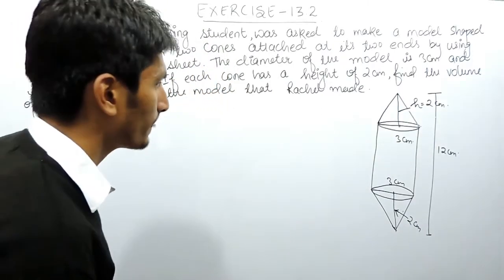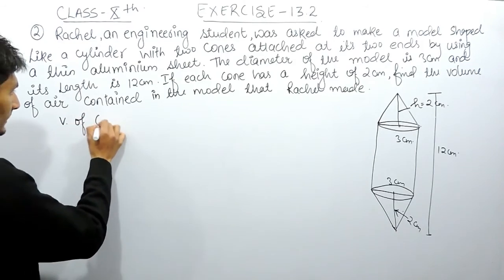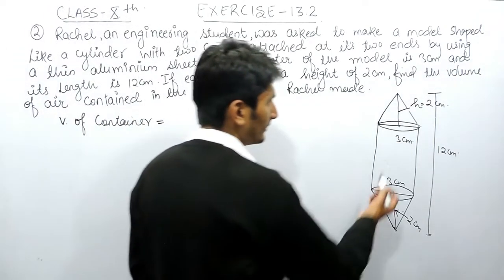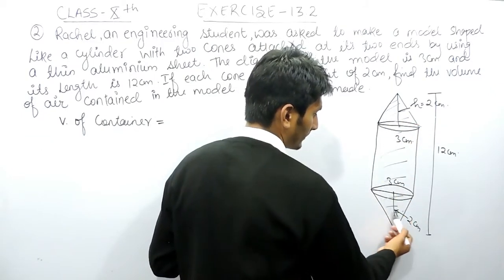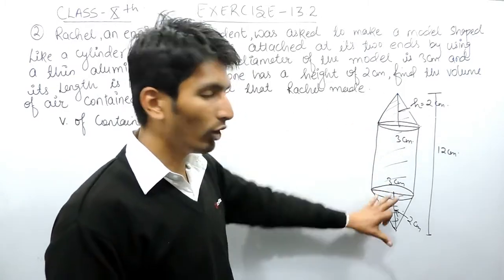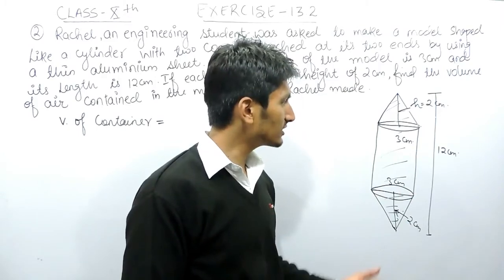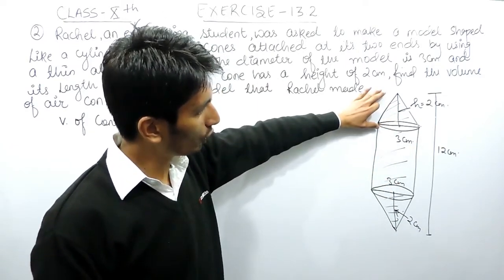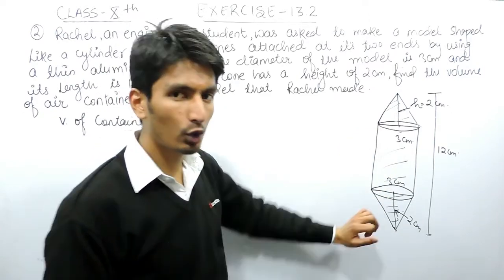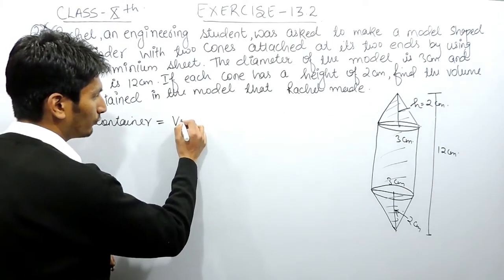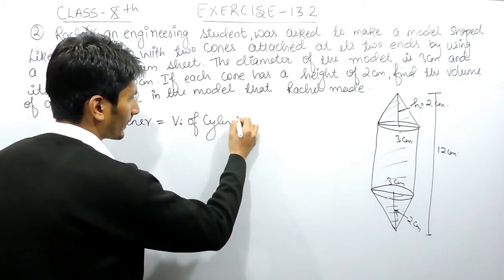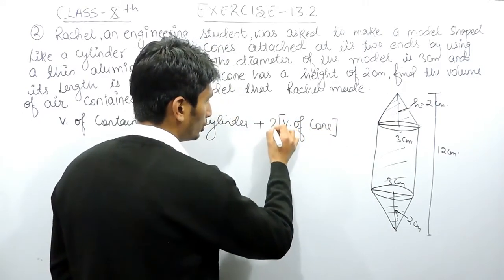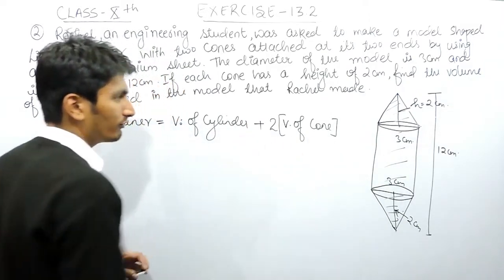Now we need to find the volume of this container. The air will be present in all three parts. To find the total volume, we add the individual solid figures: volume of cone + volume of cylinder + volume of cone. So the total volume equals the volume of the cylinder plus the volume of two cones. Since there are 2 similar cones, I can multiply the volume of one cone by 2.